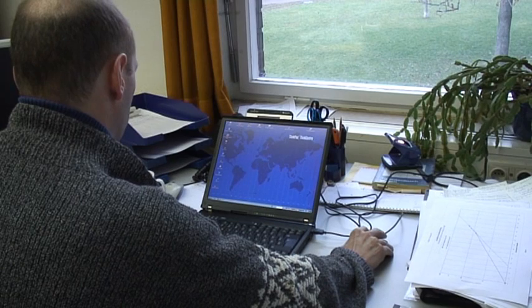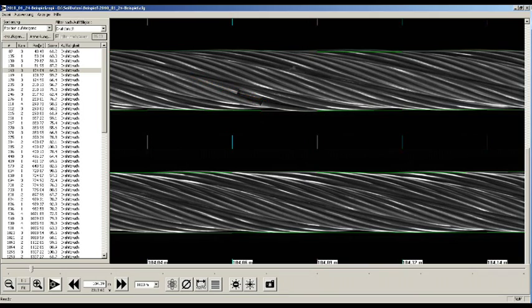The system suggests deviations of the cable structure as faults in different categories. The faults, such as breaks in the wire or damage from lightning, are marked and can be classified by the user with one button.